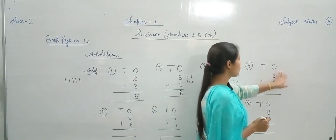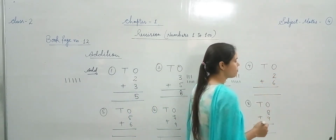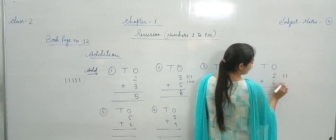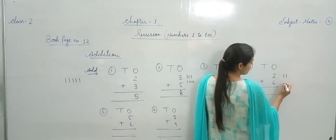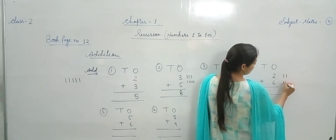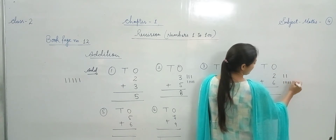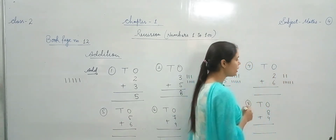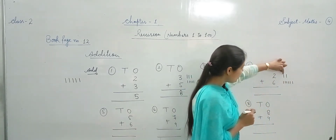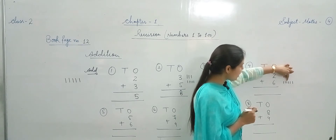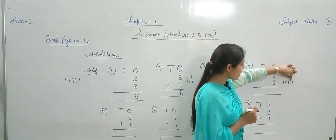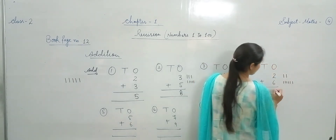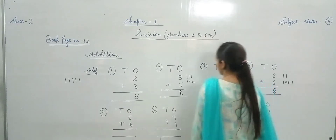Again 2 plus 6 — पहले 2 lines draw करते हैं: 1 and 2. फिर 6 lines: 1, 2, 3, 4, 5, 6. Total lines count करना है — 1, 2, 3, 4, 5, 6, 7, 8. 2 plus 6 makes 8.